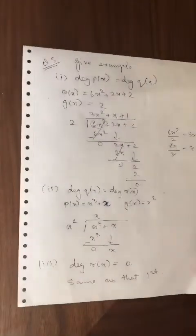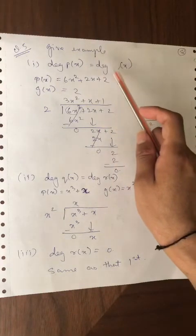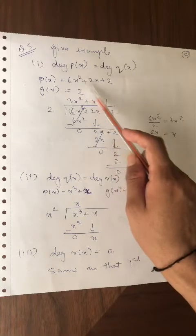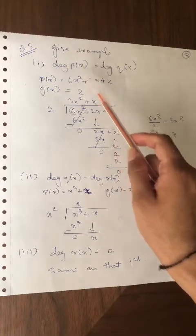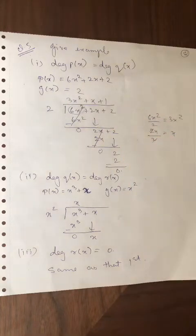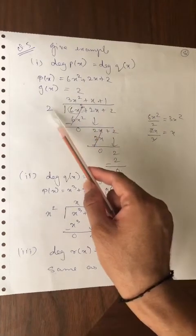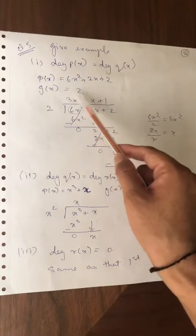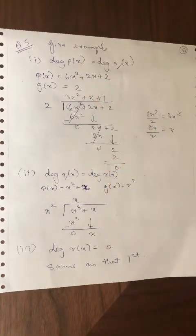Now the last sum of this exercise and chapter — chapter number 2, polynomials. You need to give an example where degree of p(x) equals degree of q(x). I considered p(x) = 6x² + 2x + 2 divided by 2. The quotient has degree 2 (starts with x²), and p(x) also has degree 2. Both degrees are the same, so this example is complete.